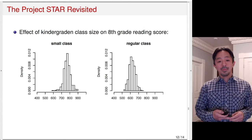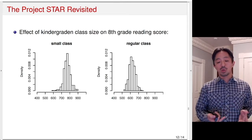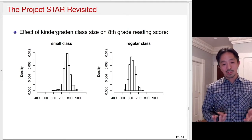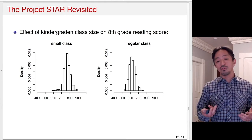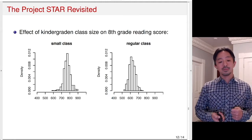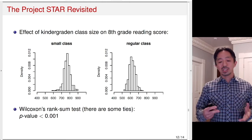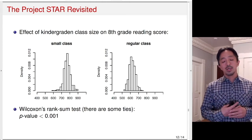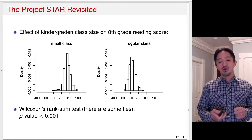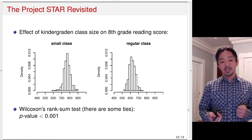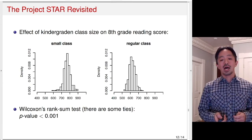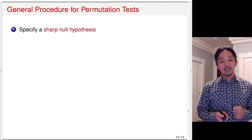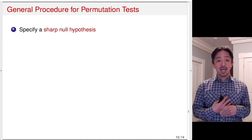Returning to Project STAR, we can look at the effect of kindergarten class size on eighth-grade reading scores. Reading scores are more continuous, so Fisher's Exact Test is not appropriate and we use the rank sum test instead. Applying the Wilcoxon rank sum test — handling ties with standard methods — the p-value is much smaller than 0.1%, which is consistent with the histograms showing students in small classes have substantially higher reading scores than those in regular classes.